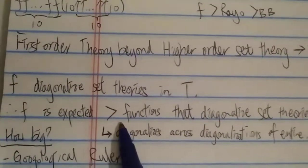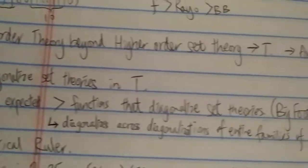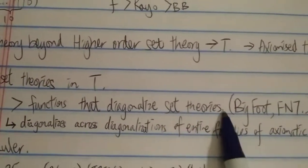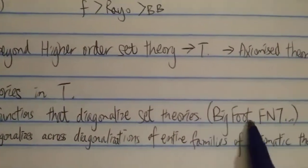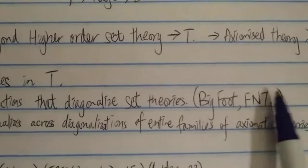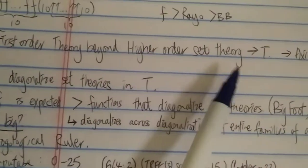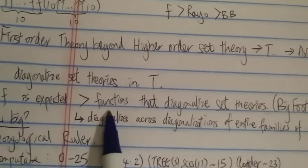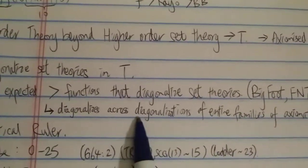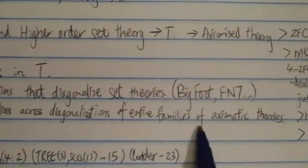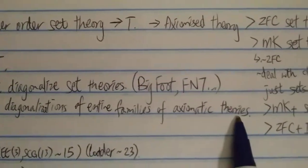And f, the function f, basically diagonize set theories in the theory t, and therefore, f is expected to be much stronger than the function, than functions that diagonalize set theories, such as the function Bigfoot, fish number seven, etc.